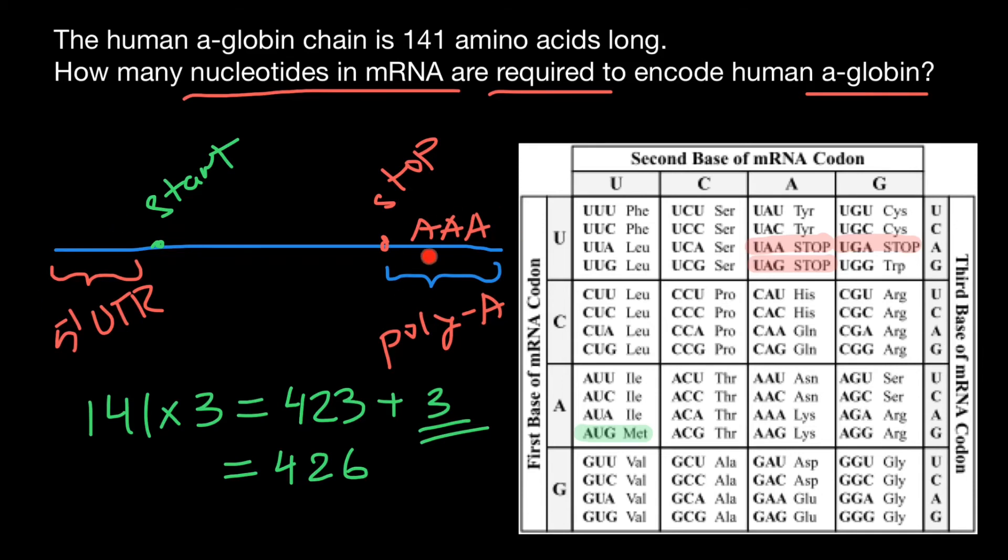Of course, it's going to be greater than that, but we don't know exactly how big the 5' untranslated region is, or how big the poly-A tail is, which consists of adenines.